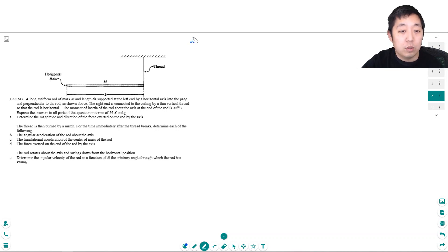Okay, so let's start. A long uniform rod of mass m and length l is supported by the left end of a horizontal axis into the page and perpendicular to the rod as shown above. There's something sticking out right here that's holding it. The right end is connected to the ceiling by a thin vertical thread so that the rod is horizontal.